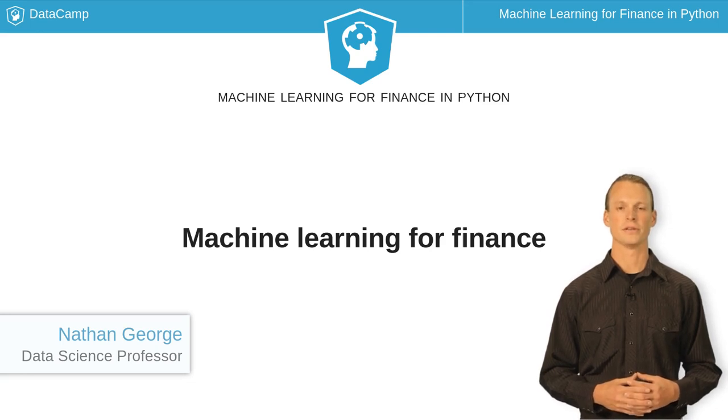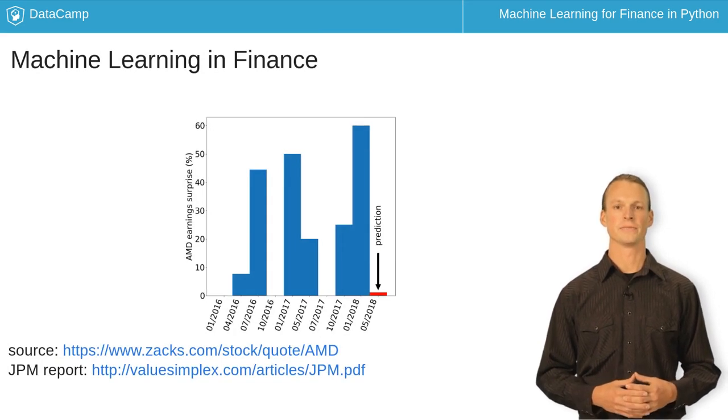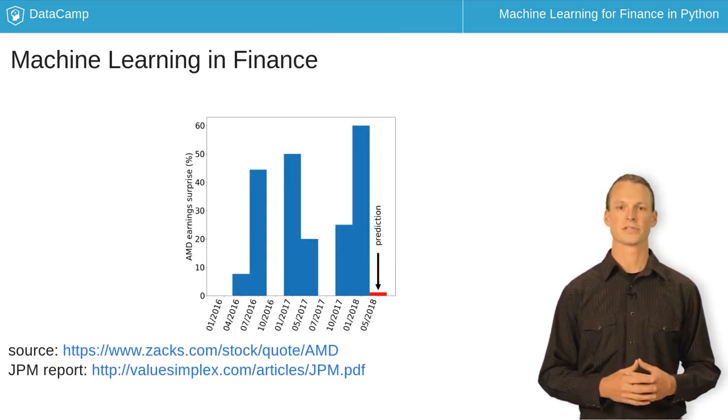In this course, we'll learn how to use machine learning for finance. Machine learning has been used in finance for years. Here's an example from Zacks, which uses machine learning to predict future earnings of companies. A report by JP Morgan says investors who don't know machine learning will be left behind.